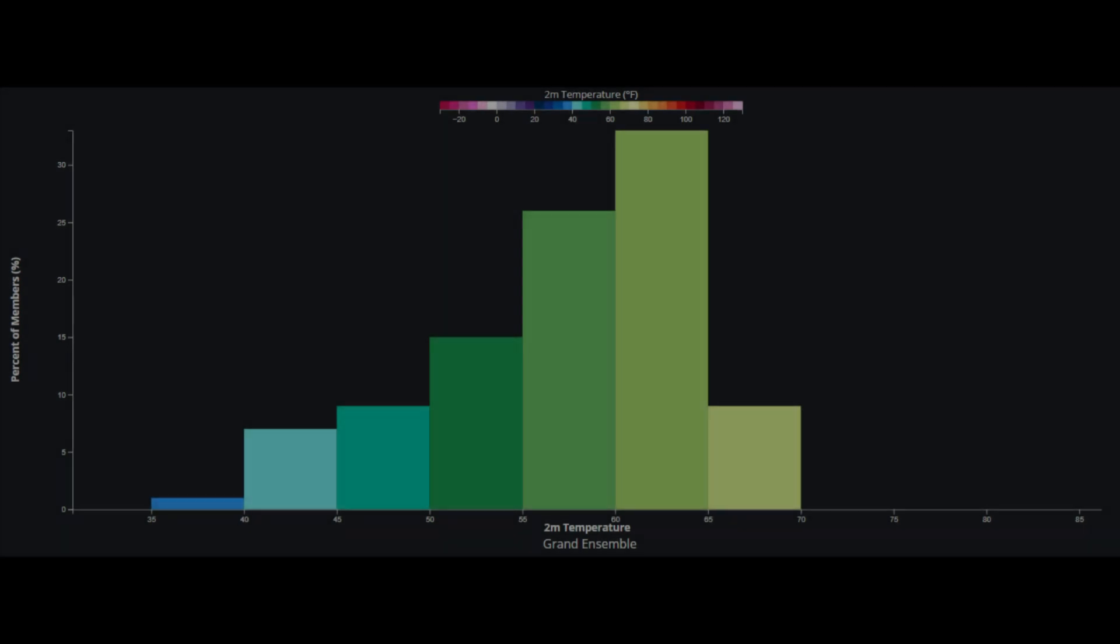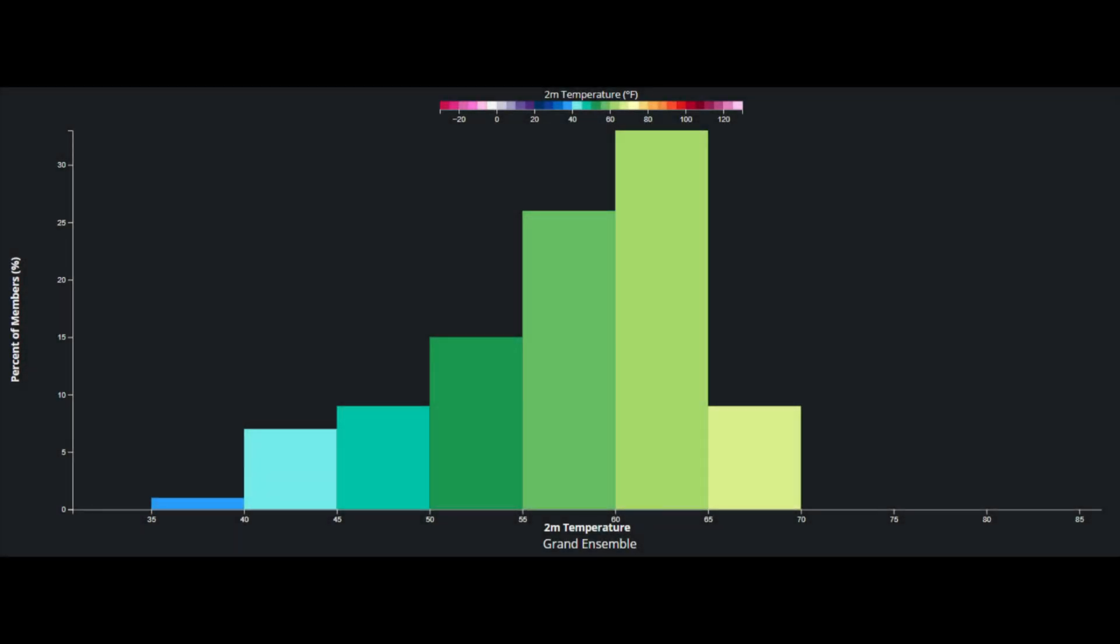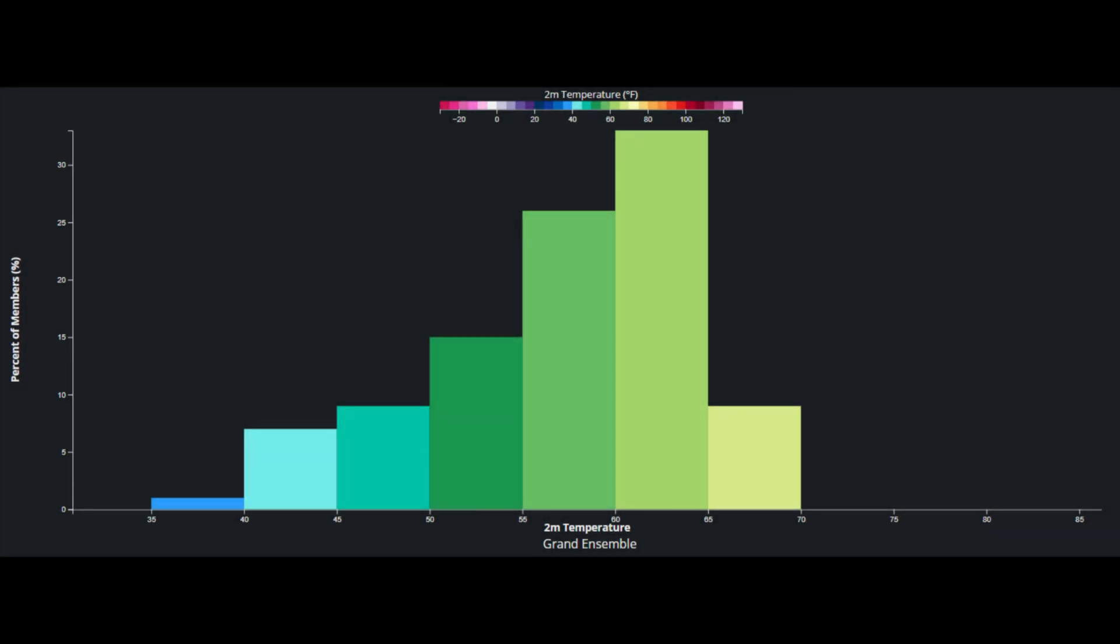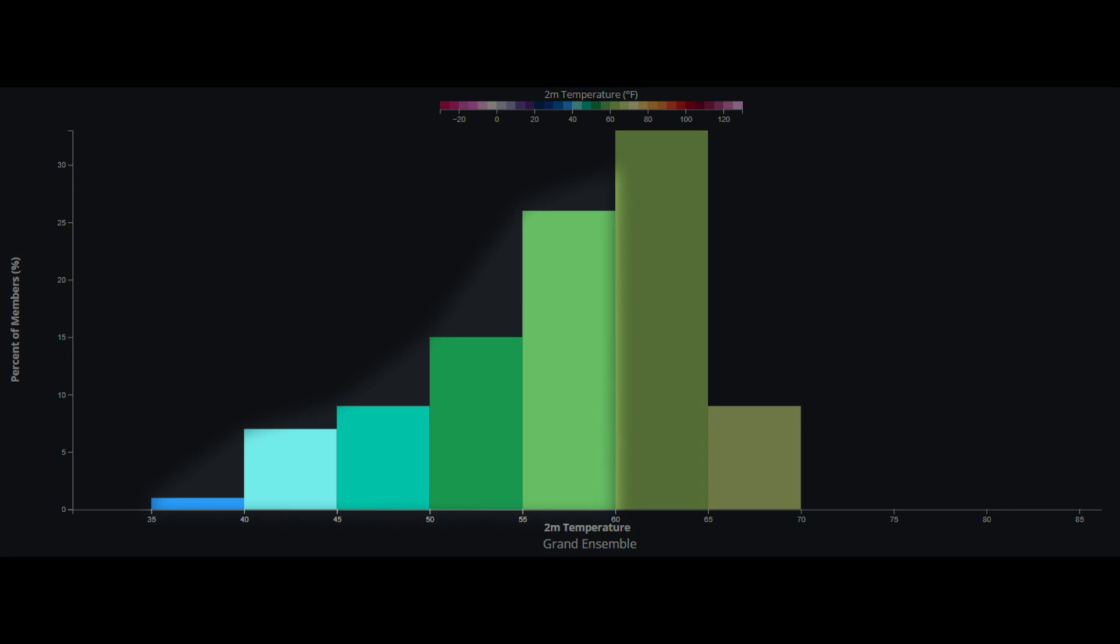Looking at this left skewed distribution of temperatures, rather than most of the values falling in the middle of the distribution, we can see temperatures drop off to the left of the median. Thinking about this in meteorological terms, you can infer that the model has greater spread falling on the colder side of the distribution and need to investigate why this could be the case.